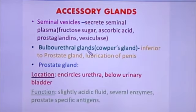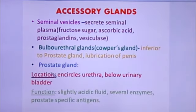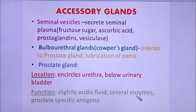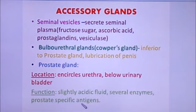The bulbourethral gland or Cowper's gland is present below the prostate gland, and its function is to lubricate the penis. The prostate gland encircles the urethra and is present below the urinary bladder. It secretes fluid containing citrate, certain enzymes, and prostate specific antigens (PSA). When the PSA level in the blood increases, it indicates the presence of prostate cancer or any other tumor.